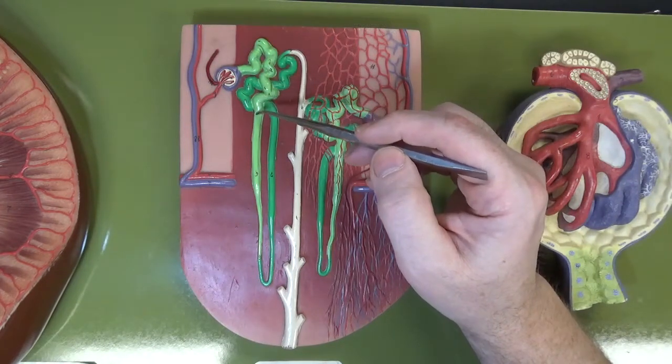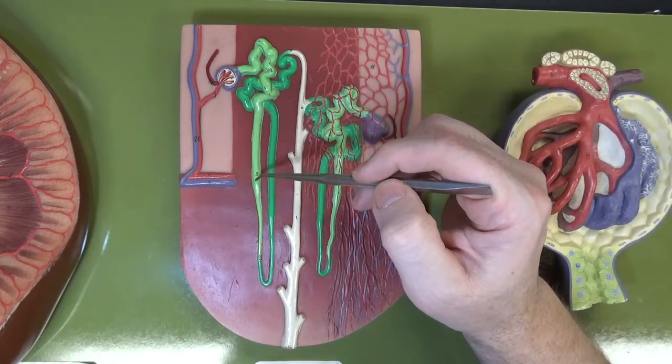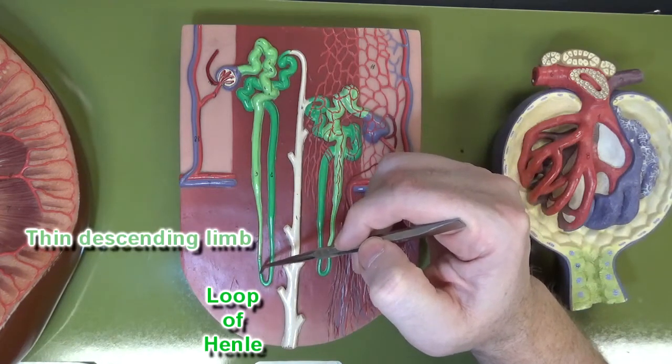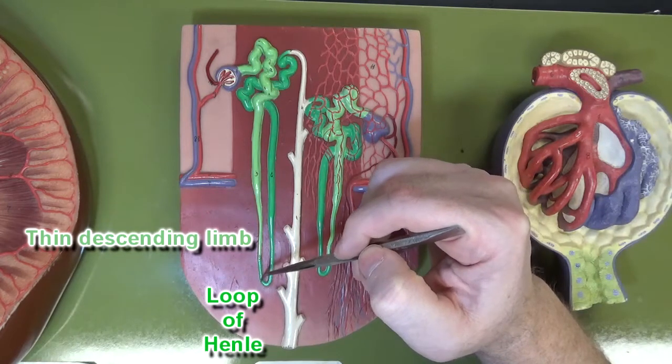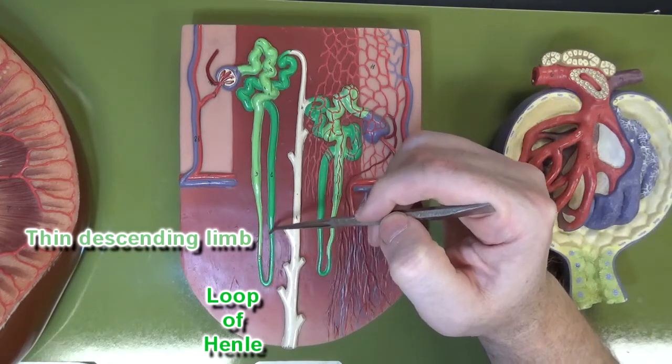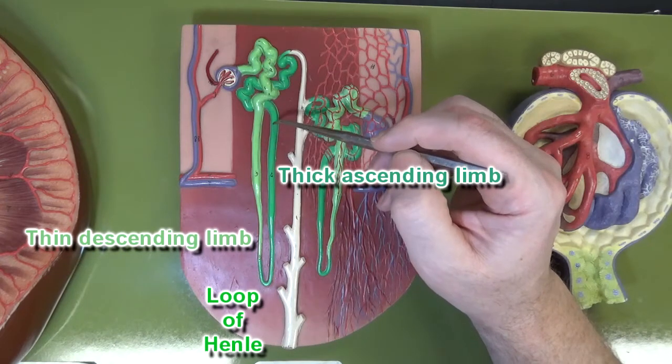Then the filtrate will pass down through the loop of Henle. So we're going to have a thin descending limb over here. Here's the loop of Henle or the nephron loop. And then we're going to have a thick ascending limb over here.